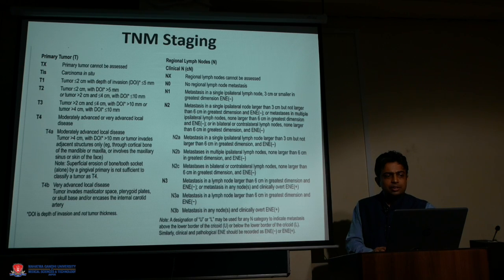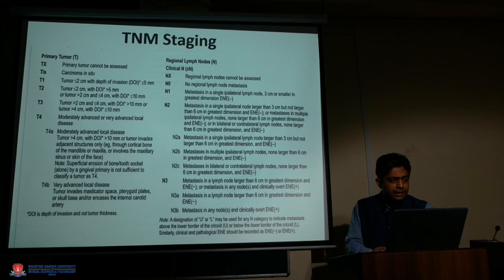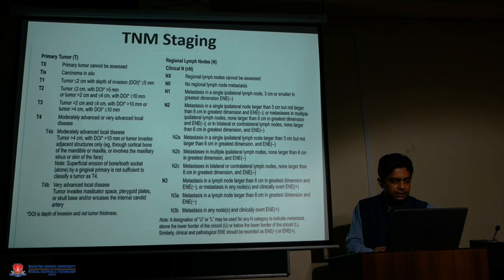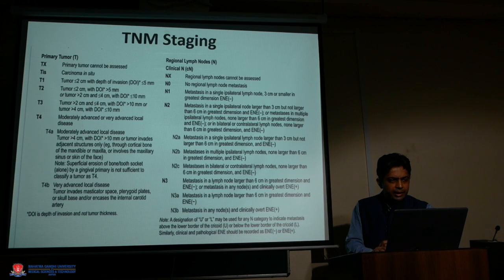T3 is tumor size 2–4 cm with depth more than 10 mm, or tumor more than 4 cm with depth less than 10 mm. T4 is advanced disease, subcategorized into T4A and T4B. T4A involves tumor more than 4 cm, depth more than 10 mm, invading adjacent structures such as the mandible, maxillary bone, skin of the face, or maxillary sinus. Superficial bone erosion by a gingival primary is not sufficient for T4 classification.